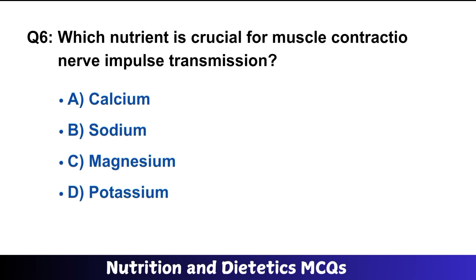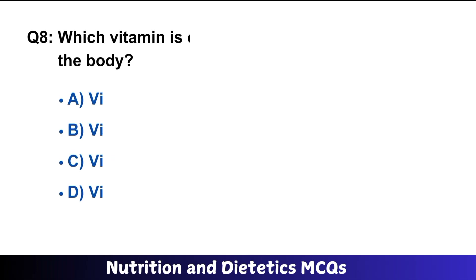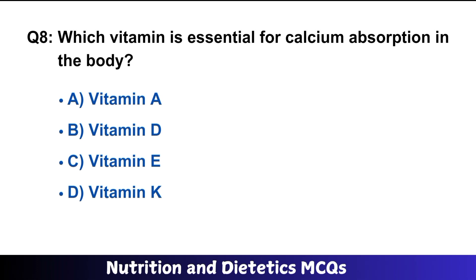Question number six: which nutrient is crucial for muscle contraction and nerve impulse transmission? A is the right option: calcium. Question number seven: which of the following foods is the richest source of vitamin C? C is the right option: orange. Question number eight: which vitamin is essential for calcium absorption in the body? B is the right option: vitamin D.